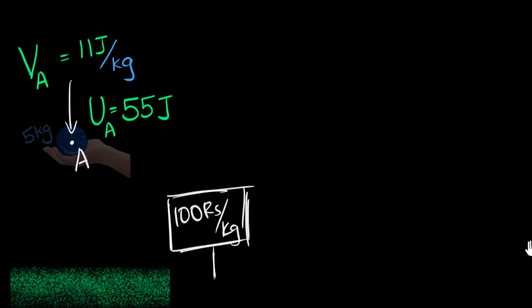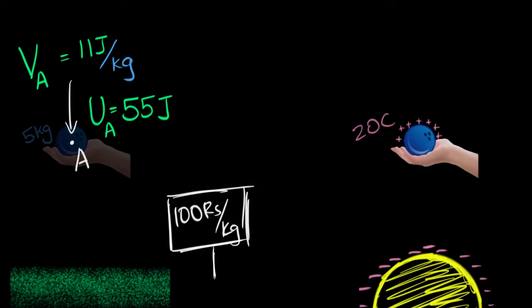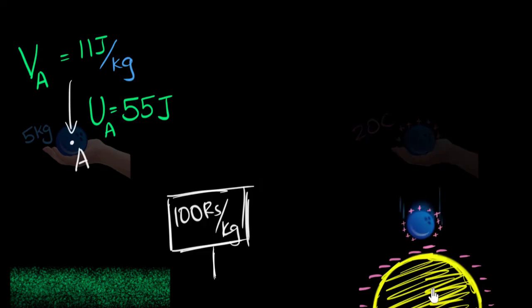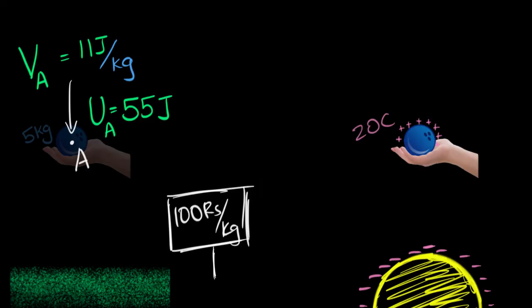Similarly, we can define electric potential. Consider an analogous case: a bowling ball that is charged — say 20 coulombs — and a large fixed negative charge somewhere below. This is similar to gravity. If I let go, the charged ball gets attracted downward, gains kinetic energy. Let's say it gains 100 joules. Where did this 100 joules come from? That energy was already stored before as potential energy.